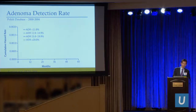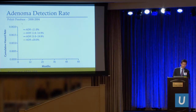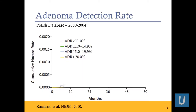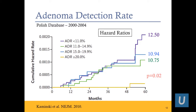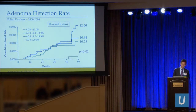If you do 1,000 colonoscopies a year, four or five patients will develop cancer despite having a screening colonoscopy with you. Why is the ADR important? This Polish database study published in the New England Journal in 2004 looked at endoscopists rated by their ADR percentage. Those in the lowest group had an 11% ADR; the highest group had an ADR greater than 20%. They found that if your colonoscopy was done by an endoscopist with an ADR greater than 20%, your risk of interval colon cancer was very low. But if done by a physician with a very low ADR, your risk of interval cancer was 12 times higher.